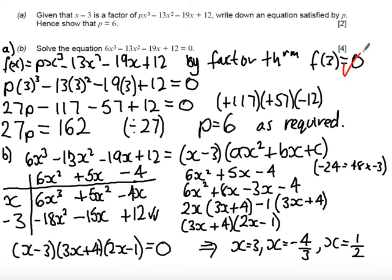First of all, method mark for using the factor theorem to say that f of 3 would be equal to 0. If you then use that and you substitute it in the value 3 into your equation and put it equal to 0, you get an answer mark.